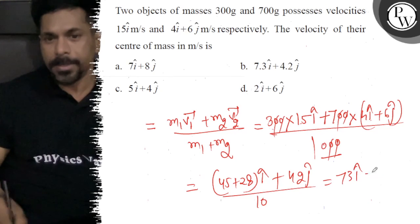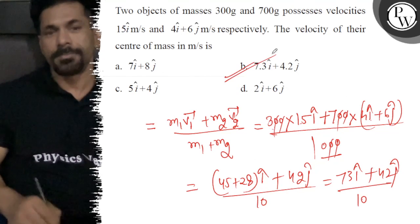That equals 73î plus 42ĵ divided by 10. So the right answer to this question is B. All the best.